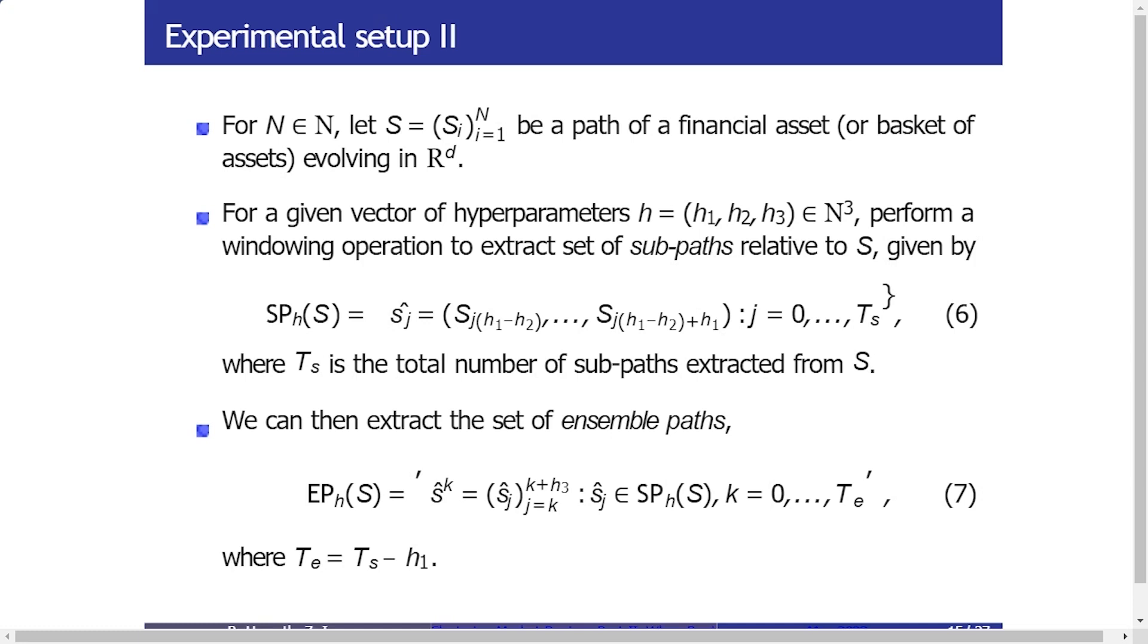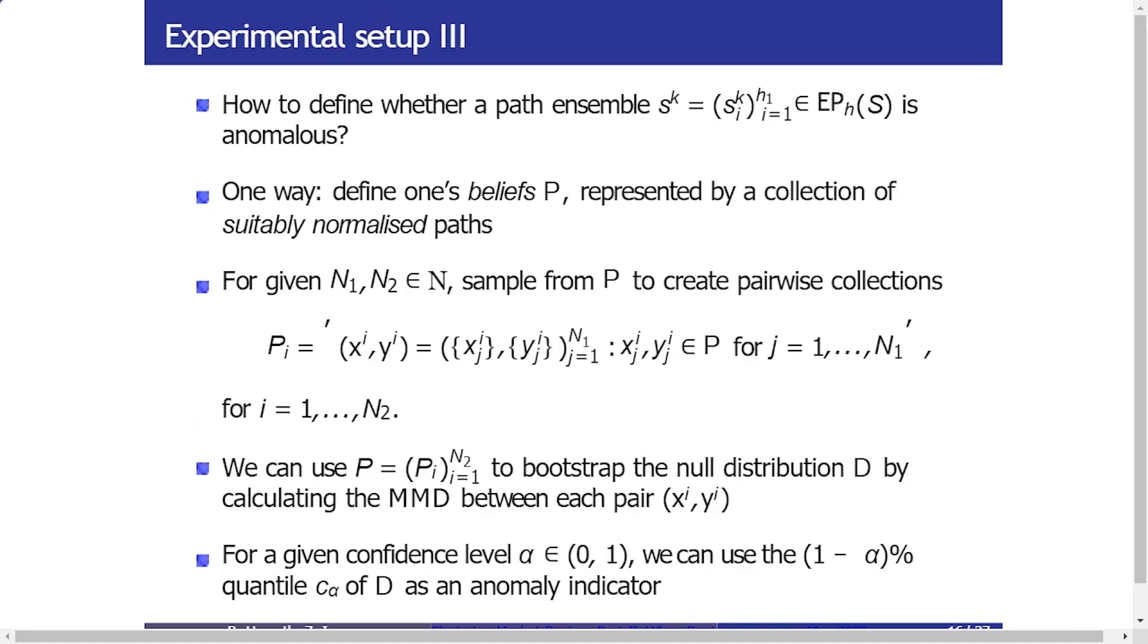And then if we want ensembles of five, we then take the first five paths and then we shift it forward and take the next five, and then we shift it forward and take the next five, so on and so forth. And then in this way we end up building a collection of ensembles given one long path that we observe. And it's this collection of ensembles that we are going to analyze in order to be able to detect market regimes.